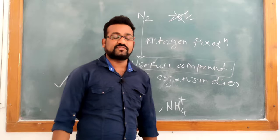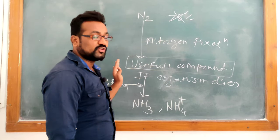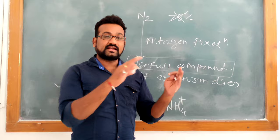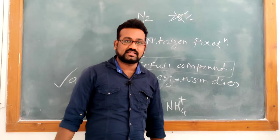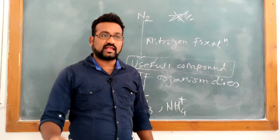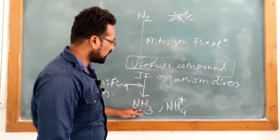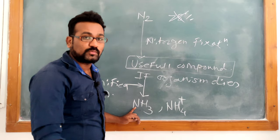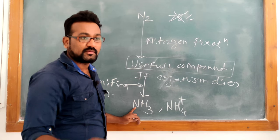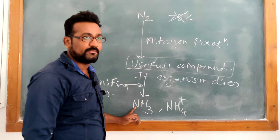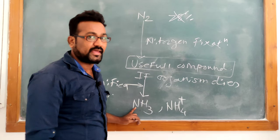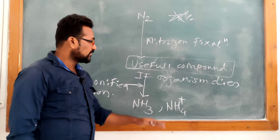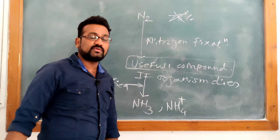It is easy to understand what ammonification is — it is different from Nitrogen fixation. In ammonification, the complex compounds in organisms after their death, or from their excretory products, are converted into simple ammonia form so that this ammonia can be utilized by other organisms. Ammonification involves formation of ammonia or ammonium ion from dead organisms or from the excreta of living organisms.